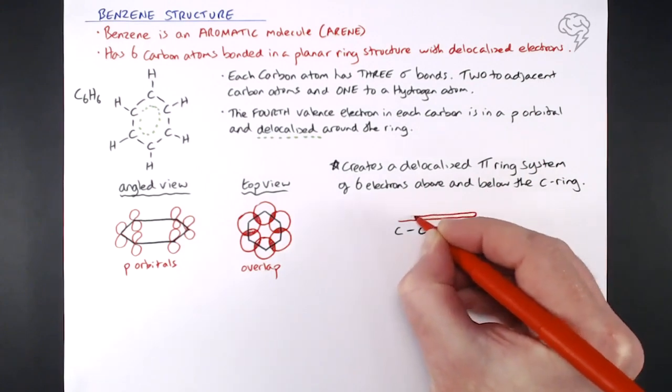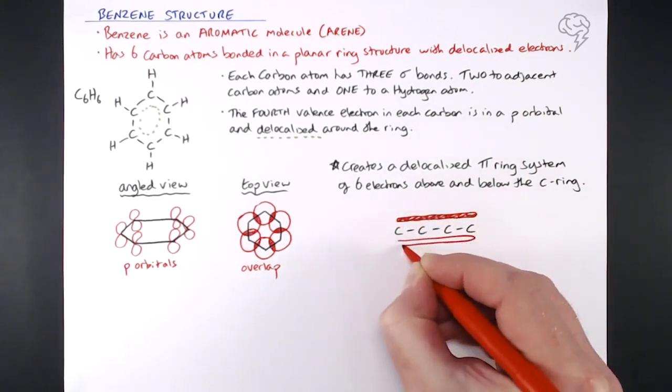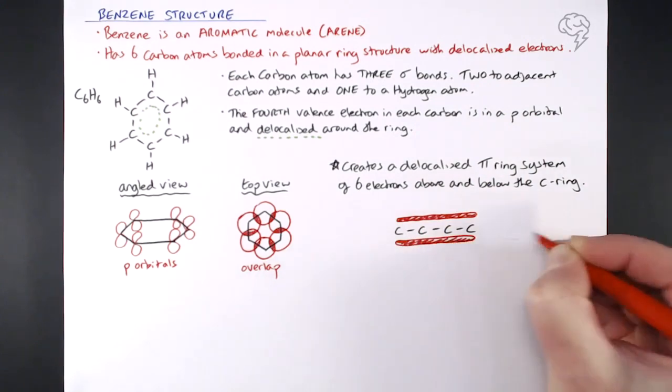So what I'm drawing here now is, well, looks like a sandwich really. The red that I've shaded in above and below these carbon atoms, that's where the overlaps of the p orbitals are, above and below the ring. So we get this area of electron density above and below the ring.